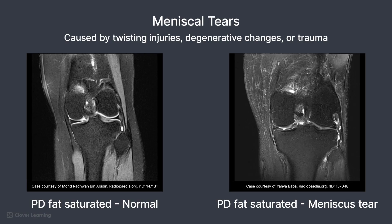On the first image, you can see the dark, wedge-shaped medial meniscus fully intact with uniform low signal. On the second image, you can see a bucket handle tear with a high signal defect extending through the meniscus, indicating a clear disruption.